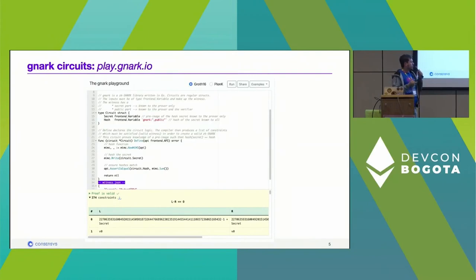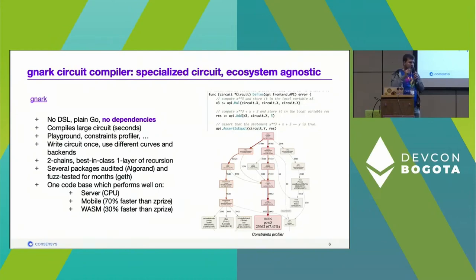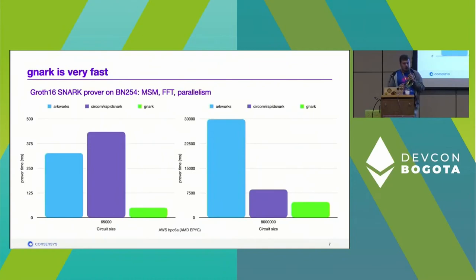Why gnark? No DSL — plain Go, no dependencies at all. We compile large circuits in a few seconds. Since you write circuits in plain Go, you can use standard Go tooling to test and benchmark your circuit. We also developed a constraints profiler: by adding just two lines of code you get a figure showing how many constraints each function consumes. Several packages are already audited by Algorand and fuzz-tested by Geth. On mobile we are 70% faster than the baseline in the ZPrize competition.